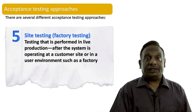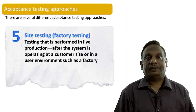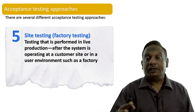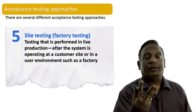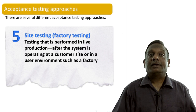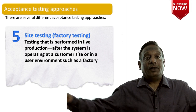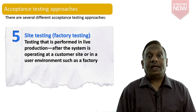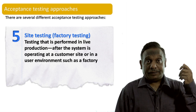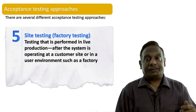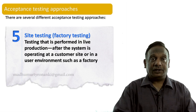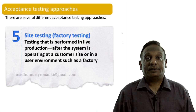Another acceptance testing approach is site testing, also called factory testing. This is testing performed in live production after the system is operating at a customer site or in a user environment such as a factory. So user acceptance, compliance and regulatory acceptance, alpha testing, beta testing, and site testing are all different approaches that can be applied in different situations, but all come under acceptance level testing.